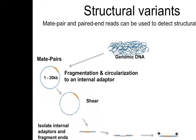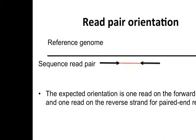However, mate pairs require extra library prep and extra sequencing. So the paired-end version, where we sequence short fragments of around 200 to 500 bases, is much more common. I'll be describing these rearrangement-finding algorithms in terms of normal Illumina paired ends, where one read points forward and one read points reverse.